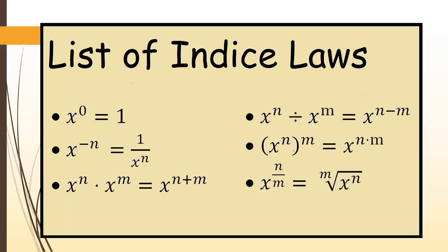Next: x to the power n, to the power m, equals x to the power n times m. For example, 5 squared to the power 3 simplifies to 5 to the power 6, because 2 times 3 equals 6. Or 7 to the power negative 1, to the power 2, simplifies to 7 to the power negative 2.